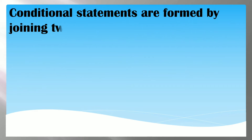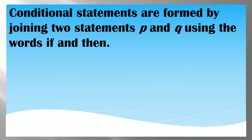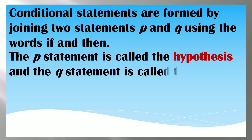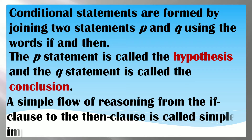Conditional statements are formed by joining two statements P and Q using the words 'if' and 'then.' The P statement is called the hypothesis and the Q statement is called the conclusion. A simple flow of reasoning from the if clause to the then clause is called simple implication.